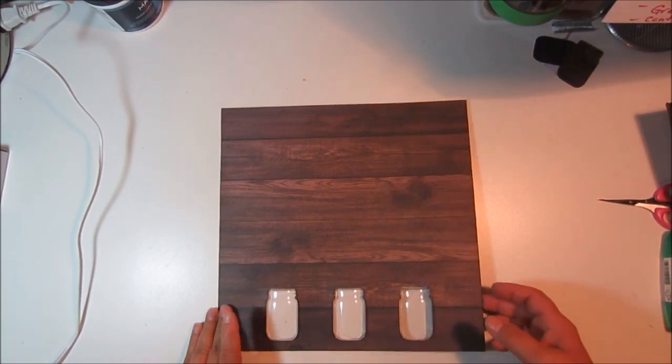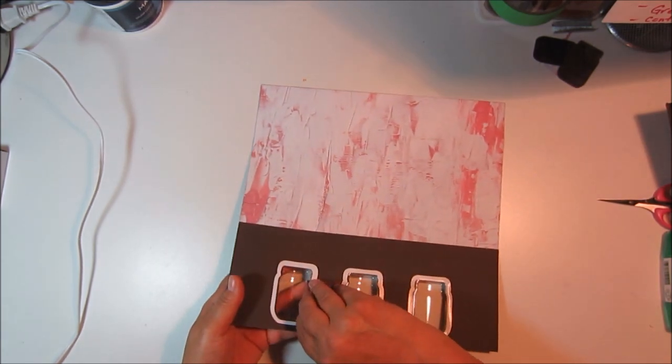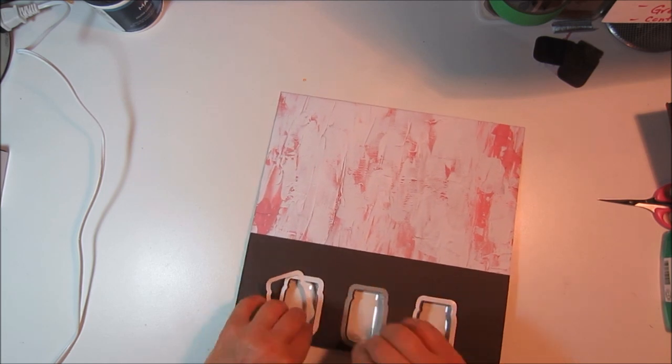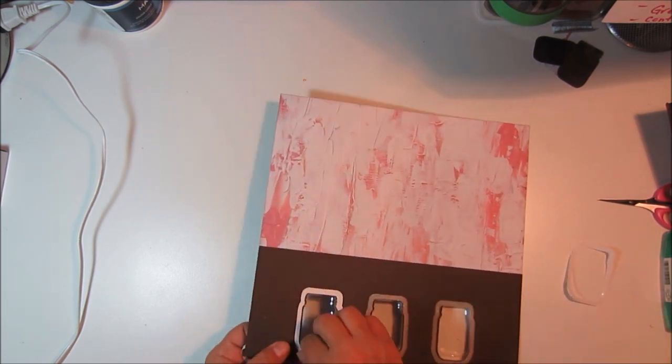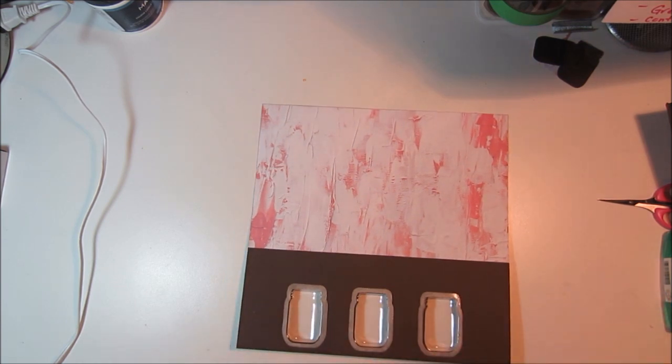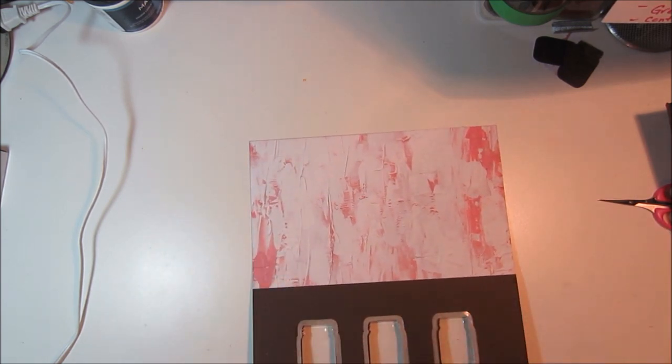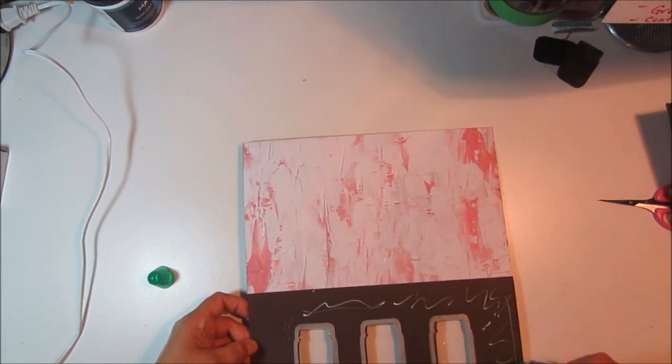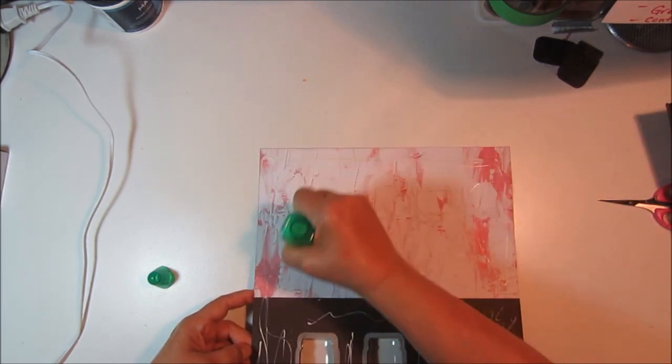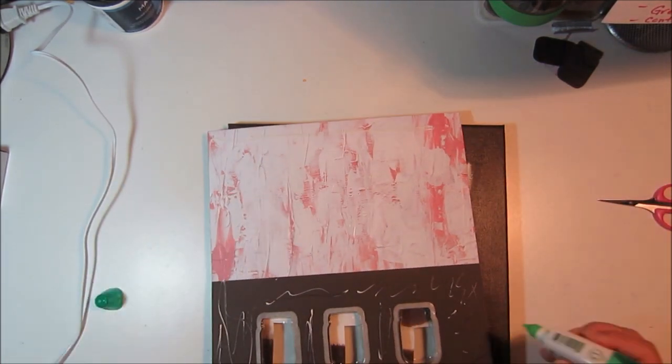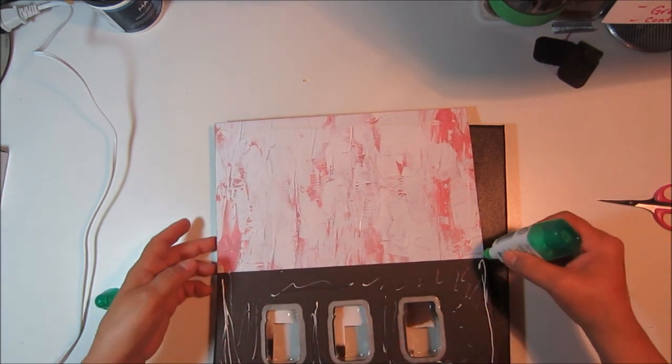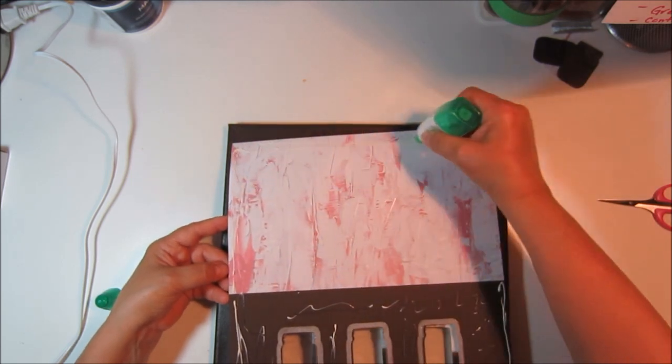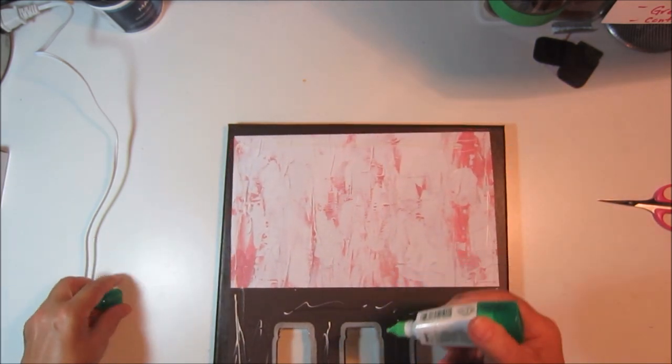Once you have all your jars in, you're going to peel the backings off and then we're going to glue it to the frame. So I'm just going to use Tombow. If you don't have it right to the edge it'll kind of peel and stick up and you don't really want that, so I got a fair amount of glue on there.